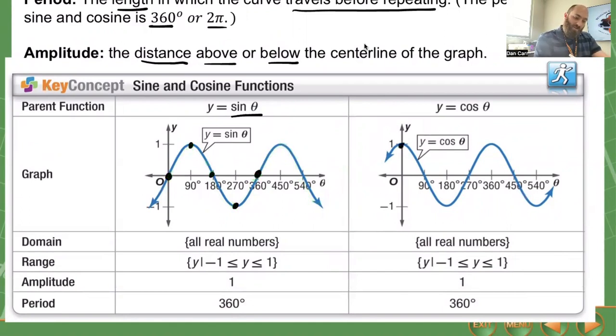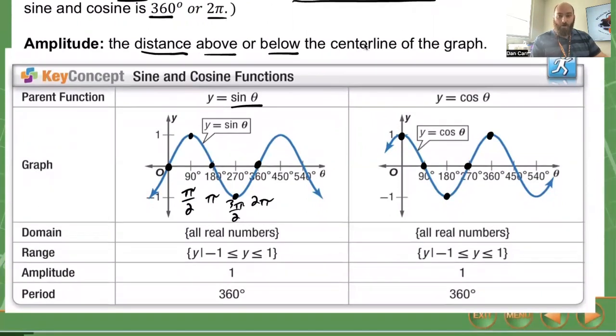Same thing happens with our cosine. We start at (0,1), cross at 90, go down to the bottom at 180, cross at 270, and then up at 360. Five points to make up one complete period. This is also in terms of radians: 90 is pi over 2, 180 is pi, 270 is 3 pi over 2, and 360 is 2 pi. We can label our graphs in terms of radians or degrees.